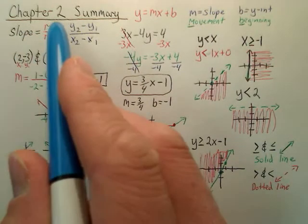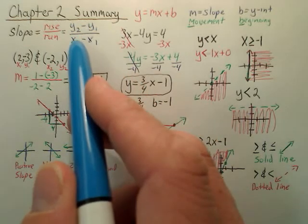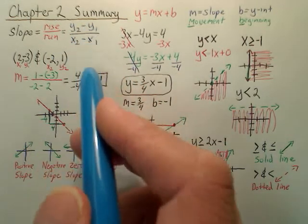You have something called slope, which is rise over run. The rise is the change in y. The run is the change in x, because the x-axis goes this way and the y-axis goes up and down.